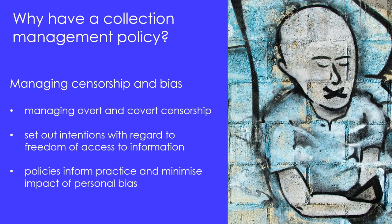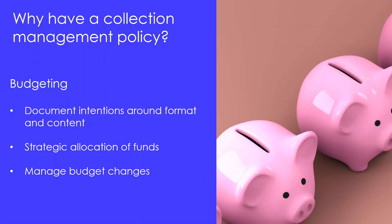The provisions in the policy form the foundation of the library's procedures and practices related to collecting. The policy plays a role in helping librarians to manage both overt and covert censorship. Policies state the library's intentions with regards to freedom of access to information. By documenting the library's intentions, we have a guideline that can inform the practice of selectors, limiting the impact of personal bias and assisting selectors to remain objective. The policy also assists with managing the budget, because it documents the library's intentions around both format and content, allowing strategic allocation of the budget and the management of changes in funding — both increases and decreases. In order to deploy collection budgets responsibly, we need guidelines on the priorities of the organization around collecting, and a collection development policy documents those guidelines.